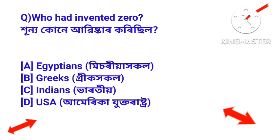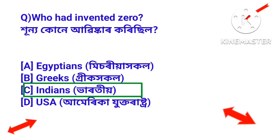Who invented zero? Huynar kuné abiskar korishil. The answer is Aryabhata — bharo chya hoie, bharo chya hokole pun prathame huynar abiskar korishil.